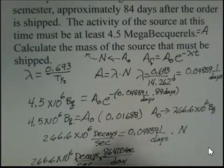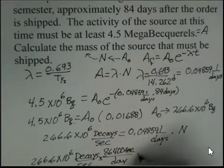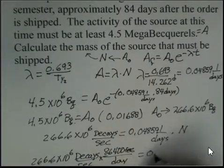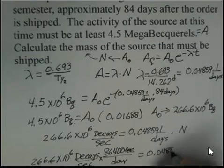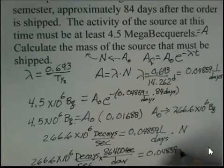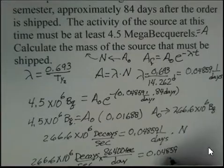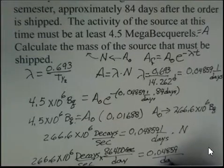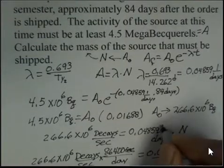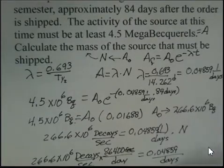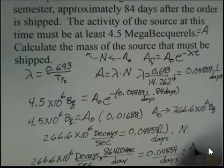So our seconds units will cancel and we'll have decays per day, equals this 0.04859, 1 over days. I better just write days here. This is a unit, not an extra digit. And we still have the N.